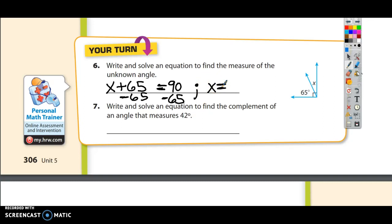x is going to be equal to 90 minus 65. The difference between 90 and 65 is 25. I can prove that. I would borrow here from the 9, making this 10. 10 minus 5 is 5, and 8 minus 6 is 2. The answer is 25.